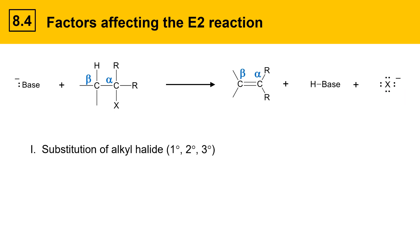There are several factors that affect the E2 reaction. The first is substitution of the alkyl halide — in other words, is this species primary, secondary, or tertiary? What are the R groups? Are they carbon groups or are they hydrogens?